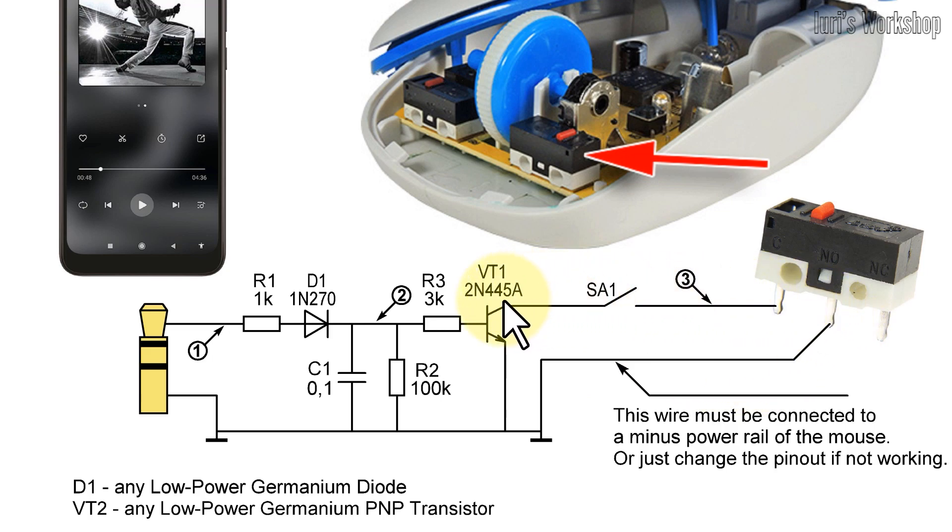The purpose of the other circuit elements is as follows. R1 limits the input signal current. R2 prevents the base circuit of VT1 from breaking. R3 limits the base current of VT1 and increases the time constant of C1R2.